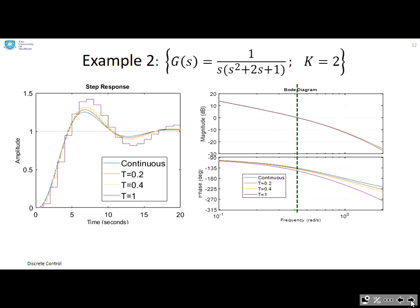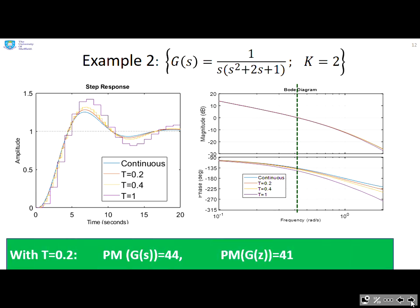Here's a second example. It basically gives the same point, and you can see at T=0.2 you get 44 degrees phase margin with G and only 41 with G(z). Now that's not a huge difference, but it's enough to make the performance, you can see over here, more underdamped. This isn't a good design by any means, but it's just to illustrate the impact.